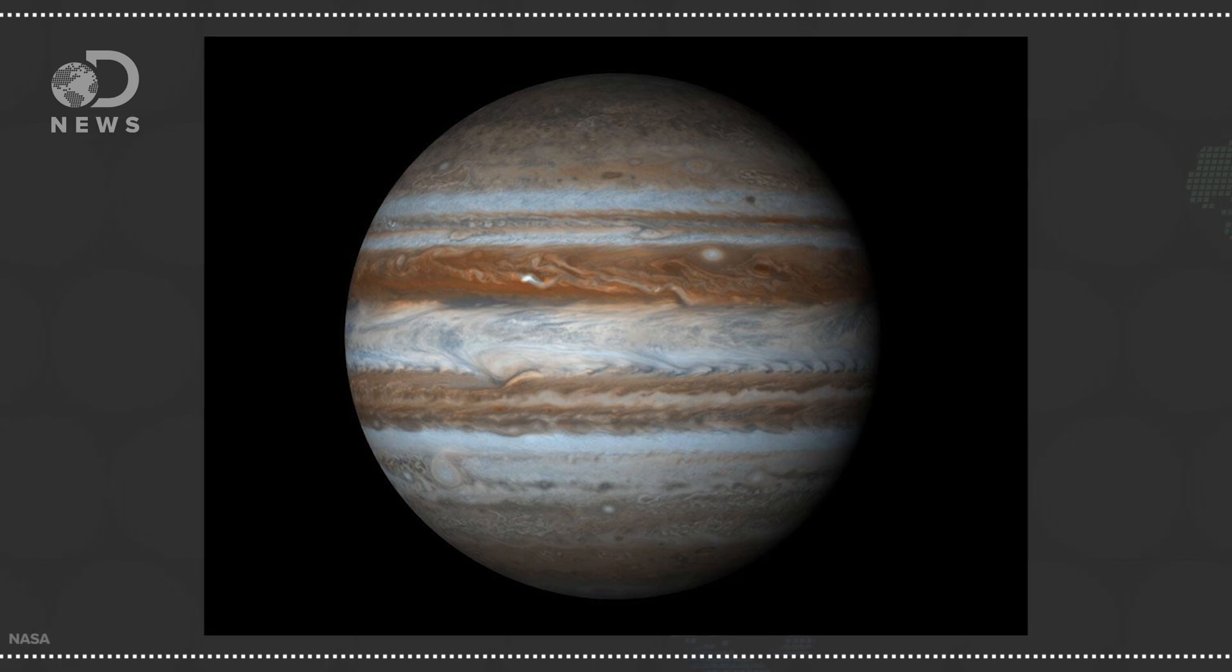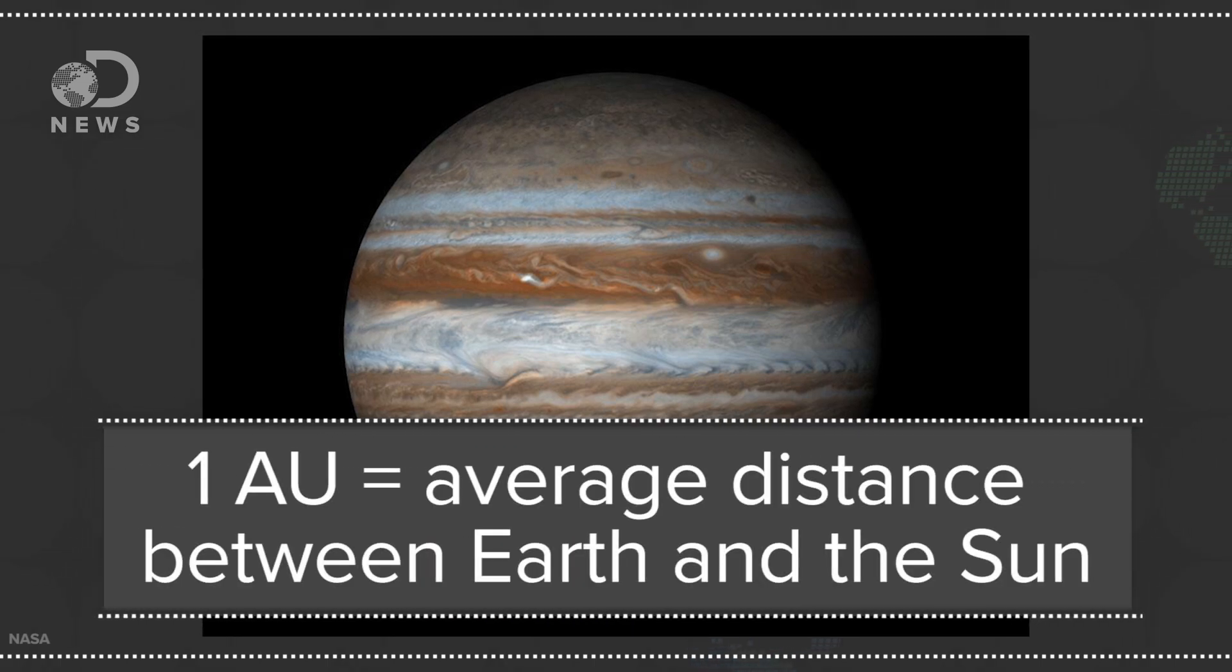While today Jupiter orbits at about 5 AUs from the sun, it used to range from 3 to 10. All that motion cleared the way like a wrecking ball. It could have even destroyed any other protoplanets which formed before the four inner planets we have now.